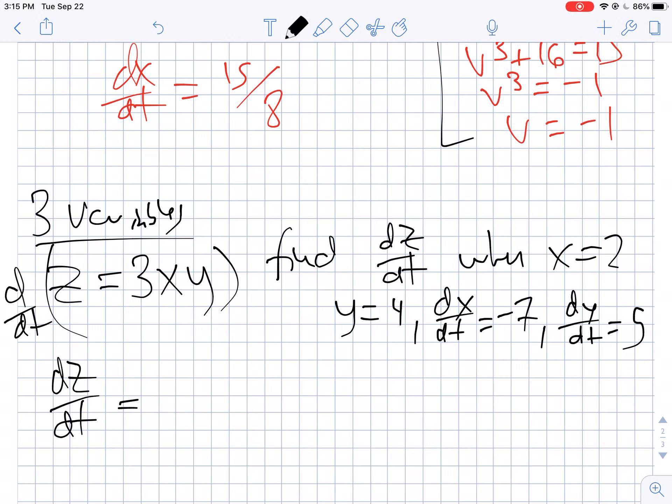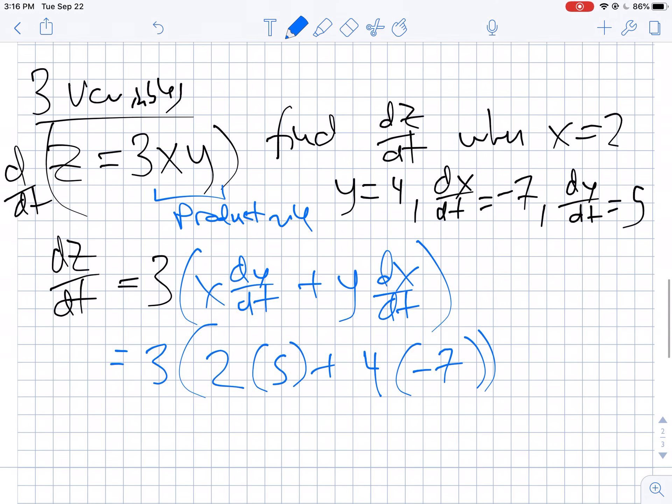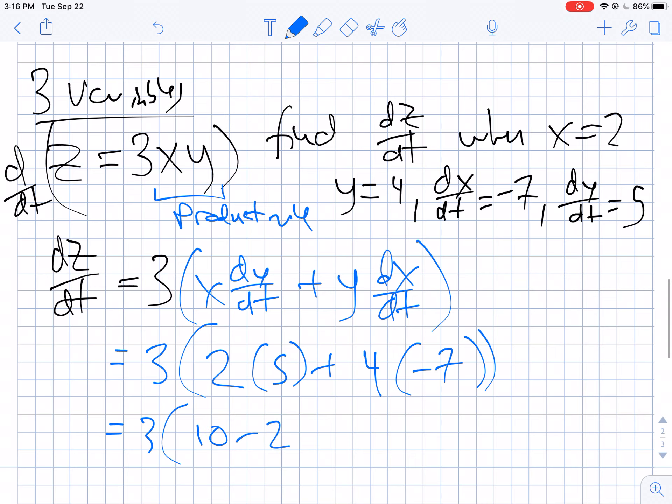When I have to do the derivative of 3xy, I'm going to have to do the product rule because I see two variables which are multiplied together. So I'm going to have x times the derivative of y plus y times the derivative of x. Now let's just plug in. We have 3 times x is 2, dy/dt is 5, y is 4, dx/dt is -7. So dz/dt is going to be 3 times 10 minus 28, which is 3 times -18. That should be -54.